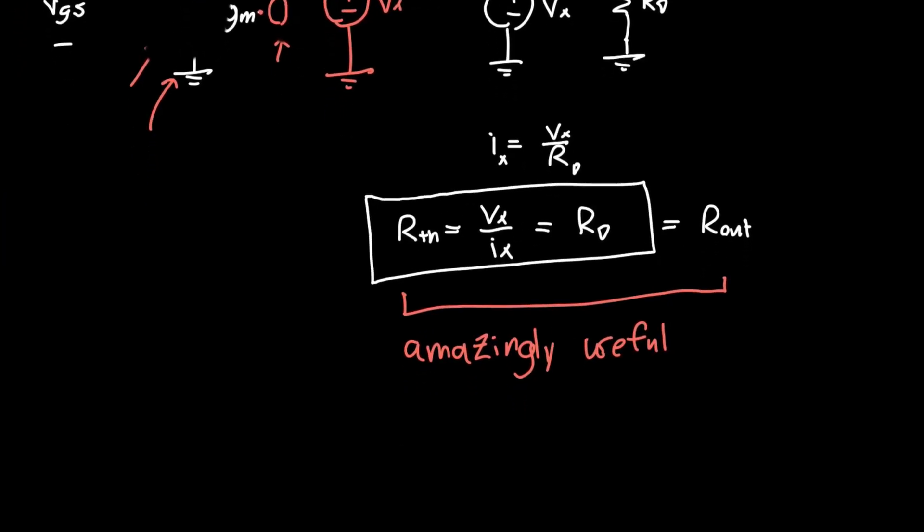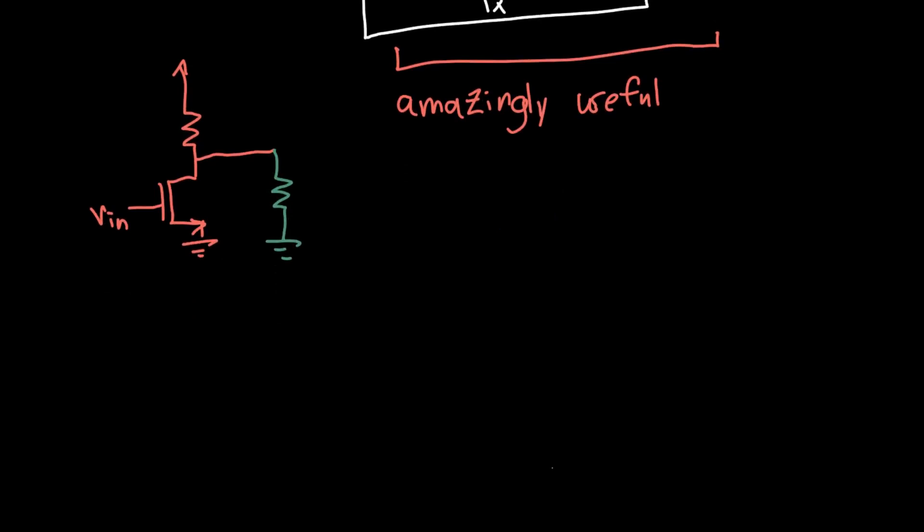So this is equal to R_out, and this result will actually turn out to be amazingly useful. This tells us how our amplifier or the circuit we've just drawn - which was just this simple common source circuit - we now know how this interacts with some other circuits. Say that other circuit is just a resistor, for example.